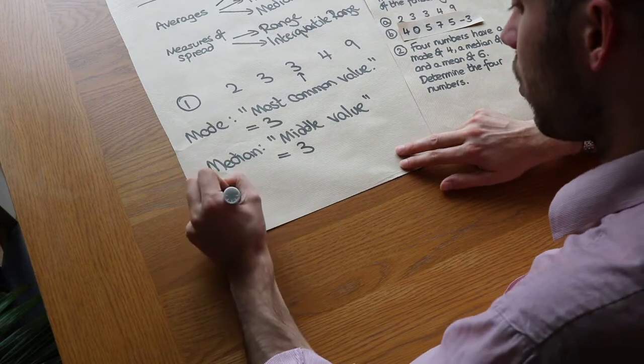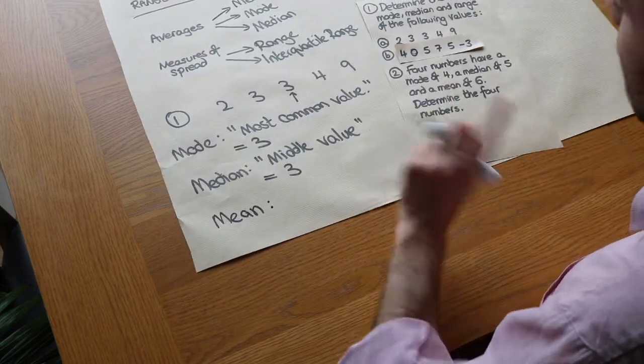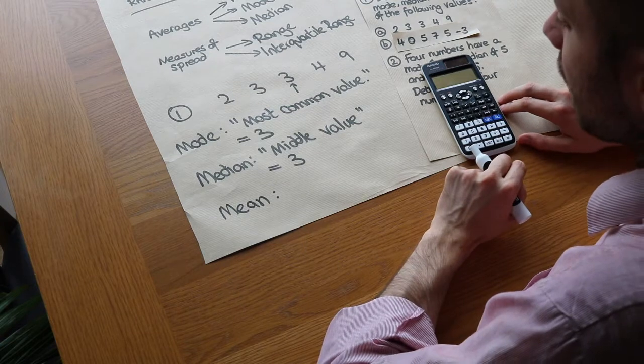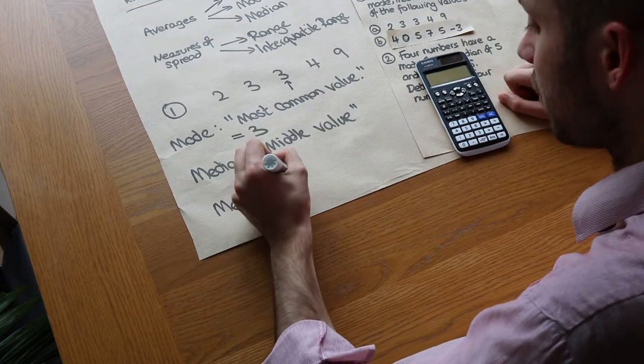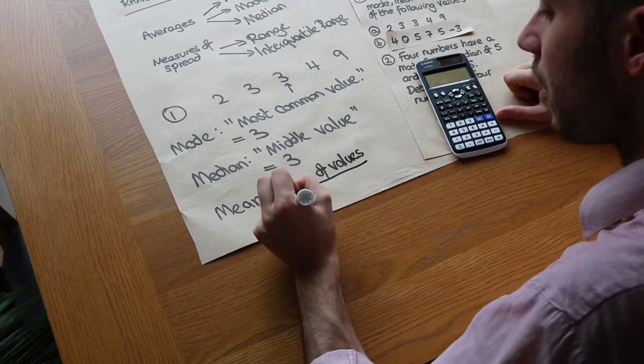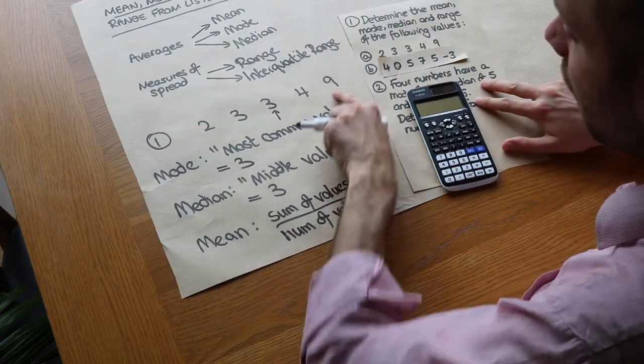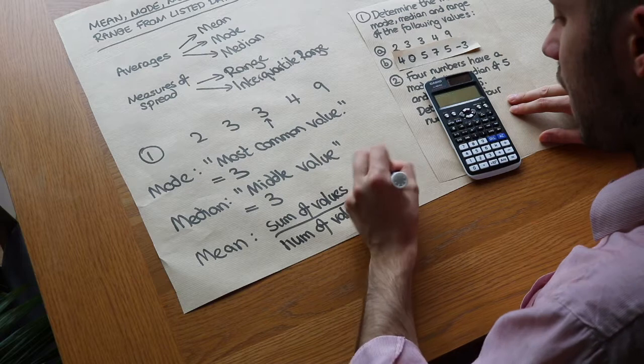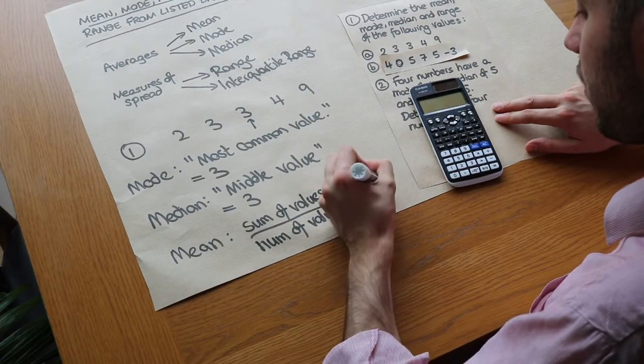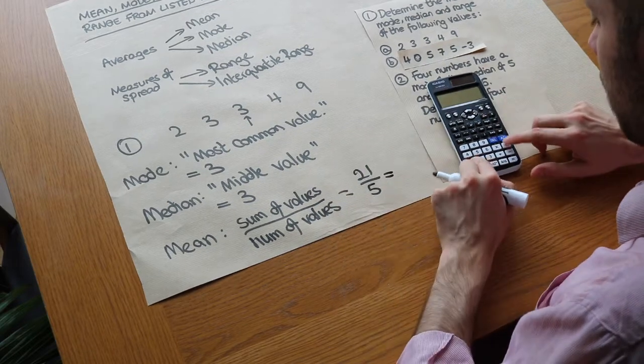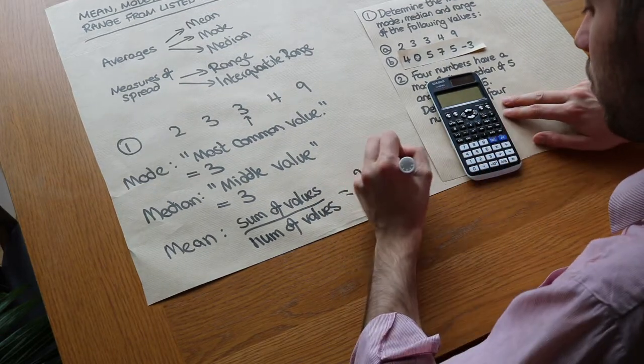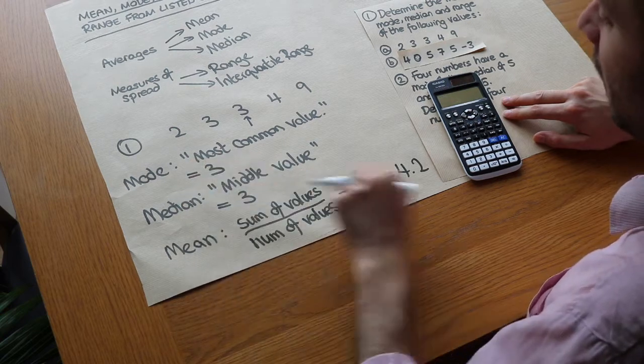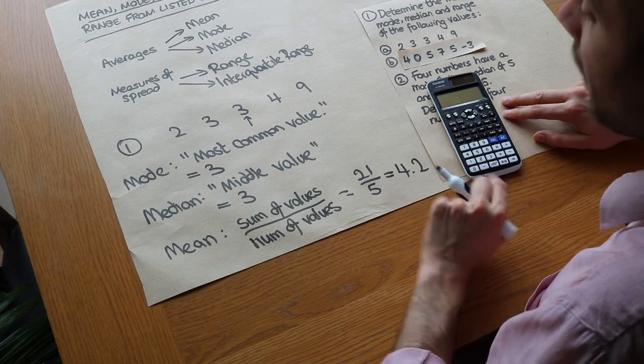And then finally we've got the mean. What the mean does is take all the values into account. We add up all the values and then divide by how many values there are, so it's equal to the sum of the values divided by the number of values we have. In this case, if we add our values up we've got 2 plus 3 plus 3 plus 4 plus 9 which equals 21, and then we divide by how many values there are, which is 5. So 21 divided by 5 equals 4.2. We can see we get a slightly different average to these other two. The averages could all be exactly the same or they could all be different.